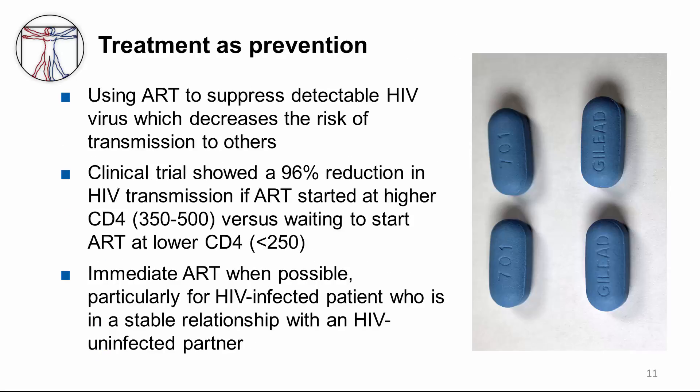Treatment as prevention refers to using antiretroviral therapy to suppress detectable HIV virus, which decreases the risk of transmission to others. There was a very important clinical trial showing a 96% reduction in HIV transmission if antiretroviral therapy was started at a higher CD4 count, in the range of 350 to 500, versus waiting to start antiretroviral therapy when the CD4 count was down to less than 250. So there's a survival benefit essentially. We recommend immediate antiretroviral therapy when possible, particularly for HIV-infected patients who are in a stable relationship with an HIV-uninfected partner.